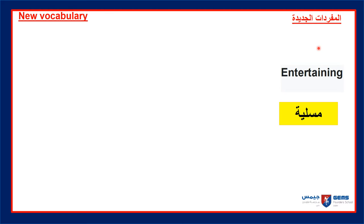المفردات الجديدة — Our new vocabulary for today. Listen and repeat, and write the vocabulary in your Arabic notebook. مُسَلِّيه — means entertaining.